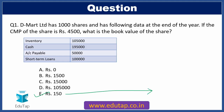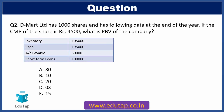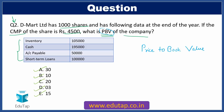Now let's move to our next question. Question 2 is an extension of the previous question. The data remains the same: DMART with 1000 shares and a current market price of Rs. 4500. Here we need to calculate the PBV of the company. Options: A) 30, B) 10, C) 20, D) 3, E) 15. PBV stands for price to book value of a share. This question also comes from the equity valuation model. Note that in Q1 we overlooked the CMP of Rs. 4500, but in this question that data is relevant.